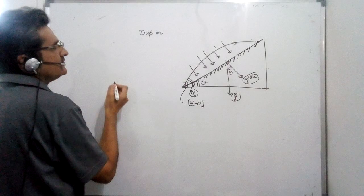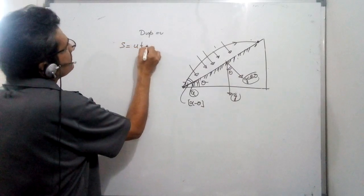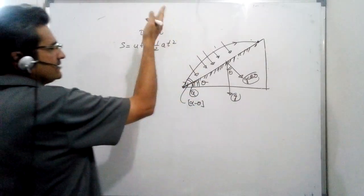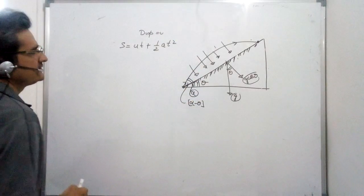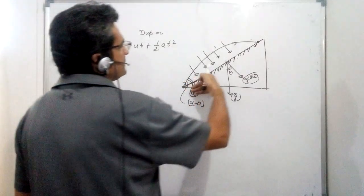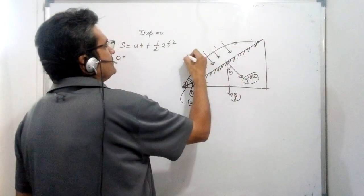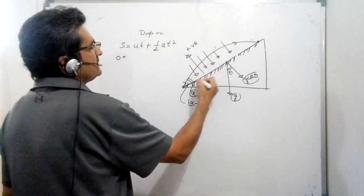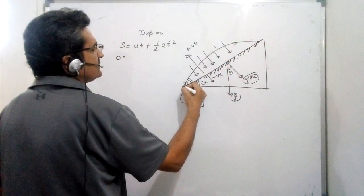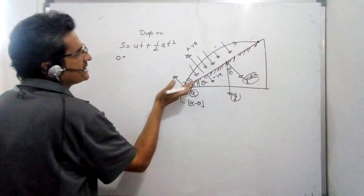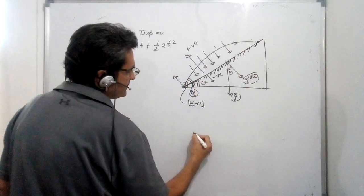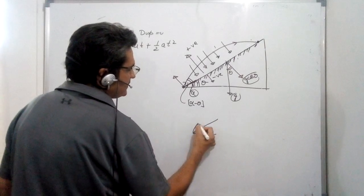We use the equation s = ut - ½at² for linear motion, where a is acceleration, u is velocity, and s is displacement. In this case the displacement perpendicular to the inclined plane is zero. Taking upward (away from the plane) as positive, we identify the velocity component perpendicular to the inclined plane.